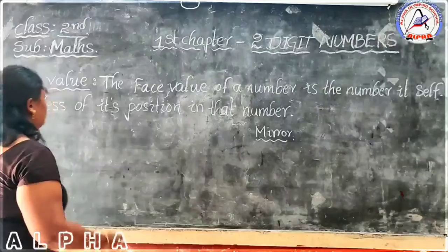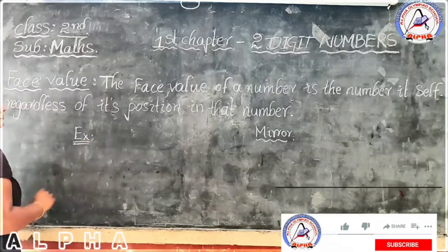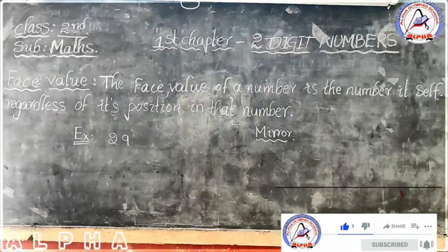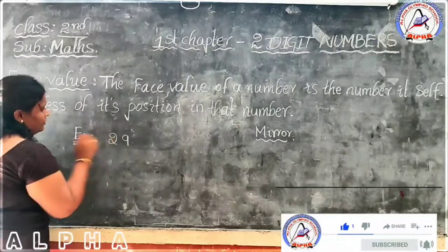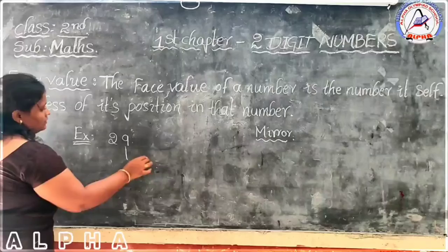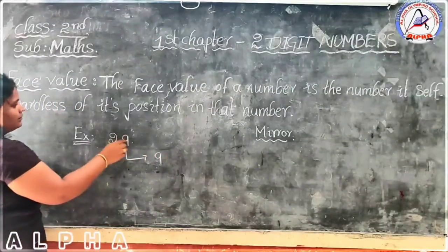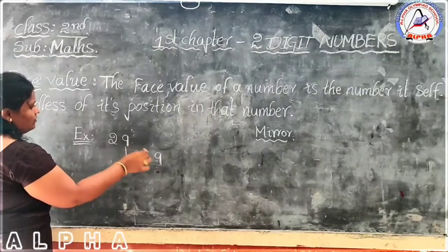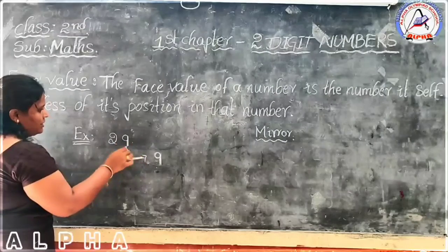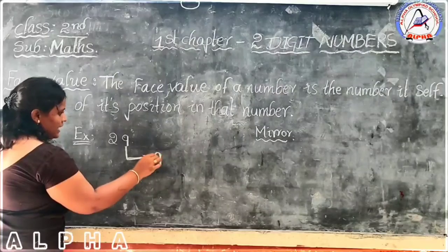As like this, see some numbers here. For example, 29. Someone is asking: give the face value for this number. Let's give the face value. The face value of 9 is always 9. Because when we see 9, only 9 appears. That's why we give the face value as 9.